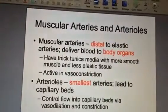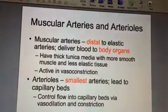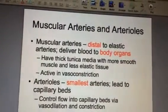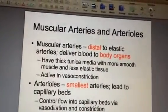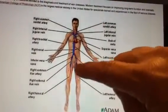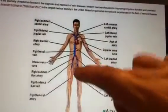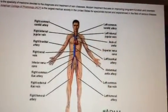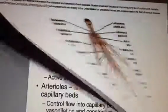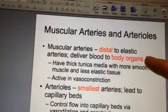Going into slide 7, there's a difference between muscular arteries and the elastic ones we were just looking at. The muscular arteries are thought to be more distal, or away from the body. Looking at the diagram, any of the arteries down here — like in the legs or way out in the limbs or even the upper thighs — would be considered muscular arteries because they're more distal, and they deliver blood to all the body organs.